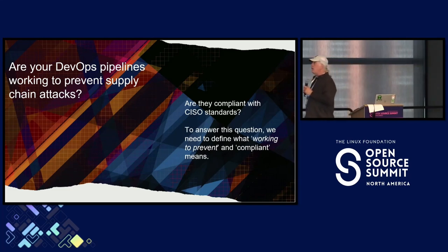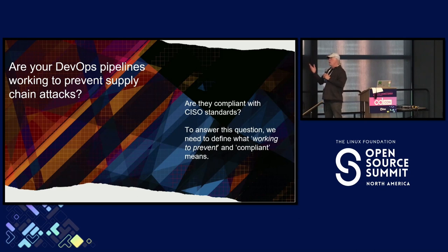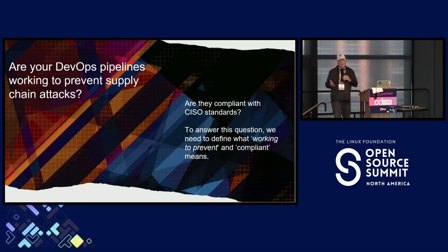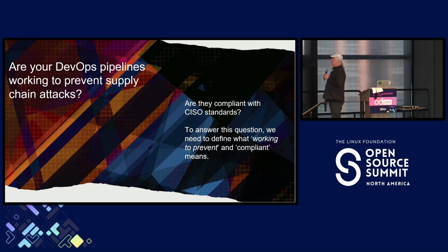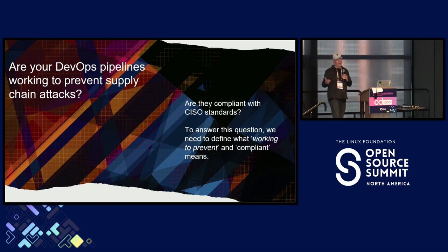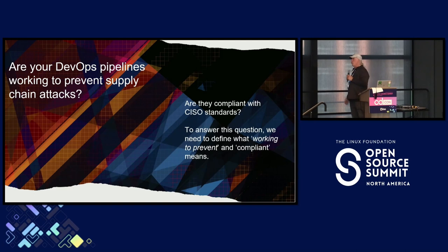One of the things we're going to address is: are your pipelines working to prevent supply chain attacks? We think they are — some of them are. There's a lot to preventing a supply chain attack. We also need to look at whether they're compliant with what our CISO office really wants us to look at — are we working to prevent something, or are they compliant? What do those mean?